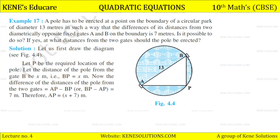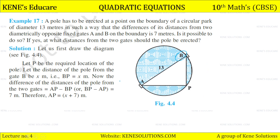A pole has to be erected at a point on the boundary of a circular park of diameter 13 meters, such that the difference of its distances from two diametrically opposite fixed gates A and B on the boundary is 7 meters. Is it possible to do so? If yes, at what distance from the two gates should the pole be erected? Let P be the required location of the pole. Let the distance of the pole from gate B be x meters — so BP = x meters.